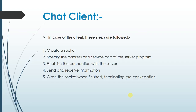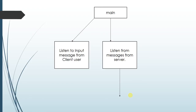Now coming to the chat client. In case of the client, these steps are followed: first, a socket is created; then the address and service port of the server program are specified; the connection is then established with the server and it starts sending and receiving information; and finally the socket is closed at the termination of the conversation. Here you can see the flowchart showing the main method, which listens to input messages from the client user and listens for messages from the server.